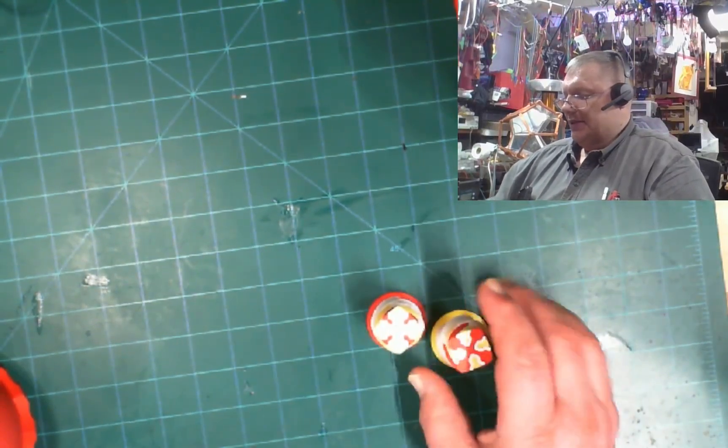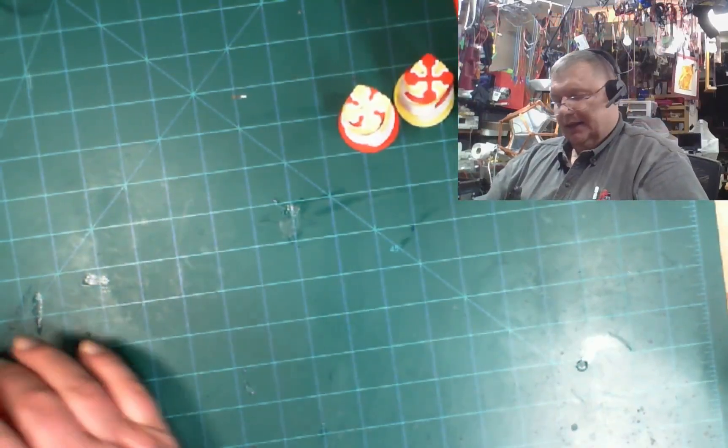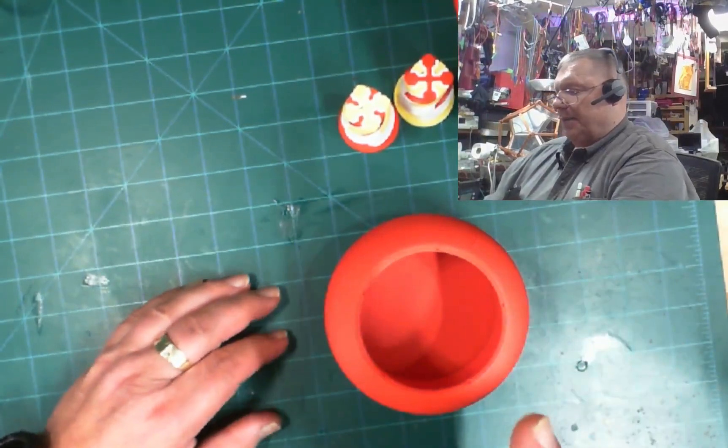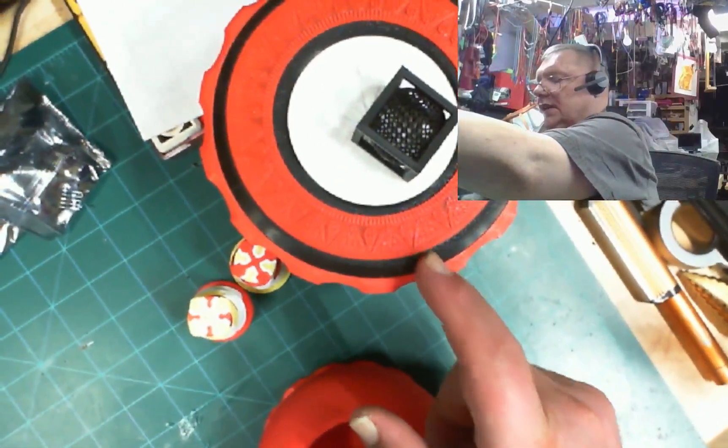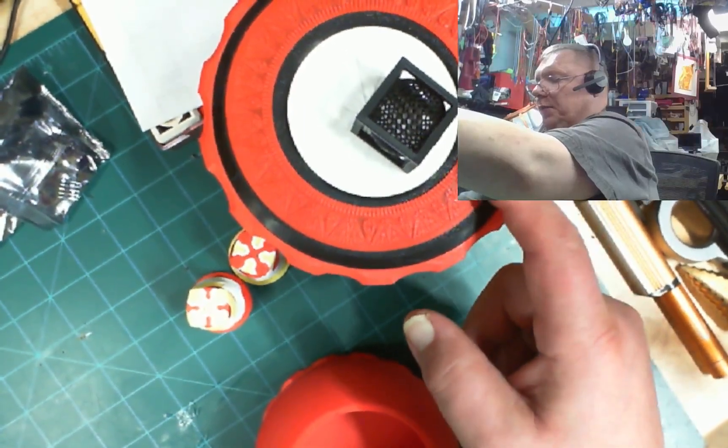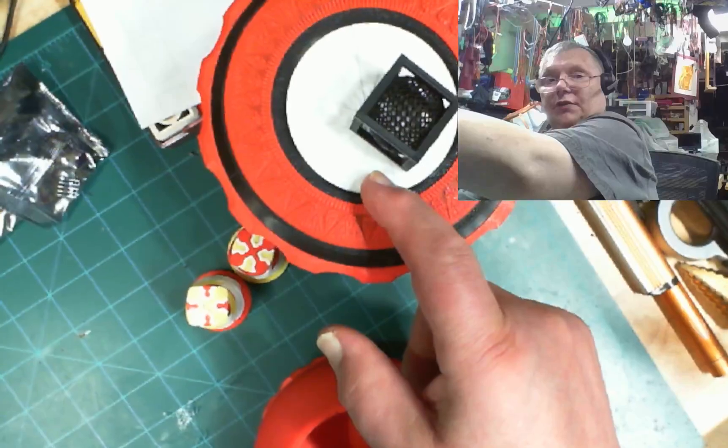And lastly, another one of those was an iris. The previous one, this guy was printed in 1, 2, 3, 4 parts and then 12 of the blades.